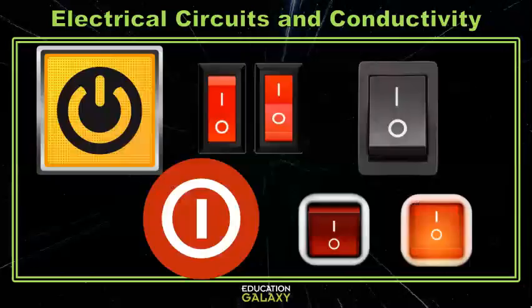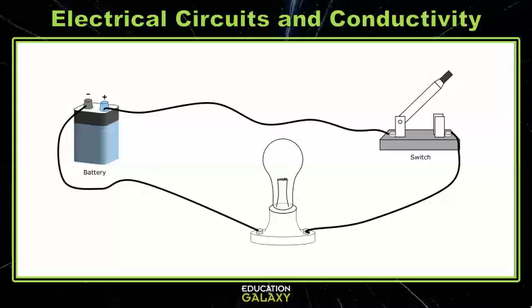If you look at some electrical switches, you might notice a line for closed and a circle, or O, for open. Now we can open and close our circuit and turn our light on and off. Let's pause and look at a question.